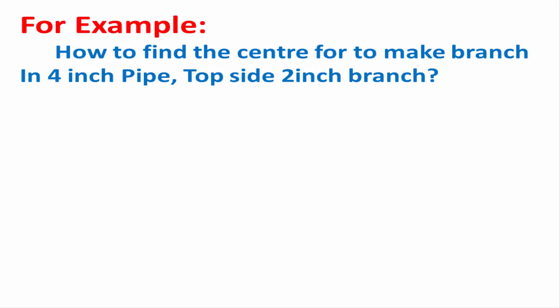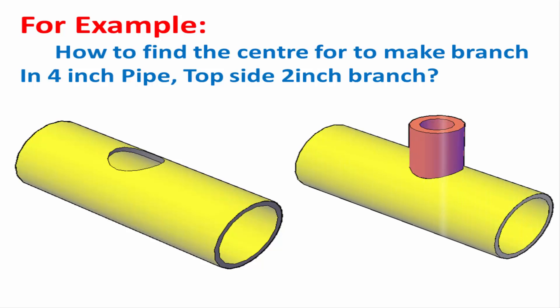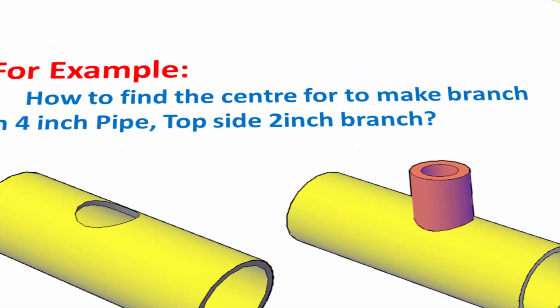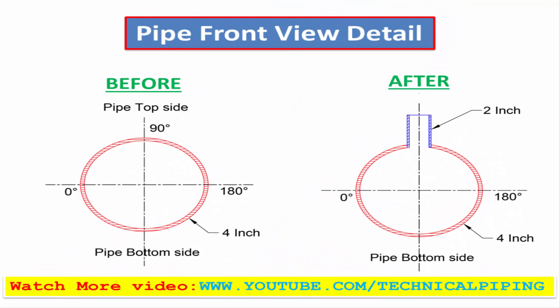For example, how to find the center to make a 2 inch branch connection in a 4 inch pipe. A 3D drawing shows the required branch connection side — it is the top side of the pipe. This drawing explains the front view of the pipe before and after making the branch. Our branch connection is at 90 degrees on the top side of the pipe.